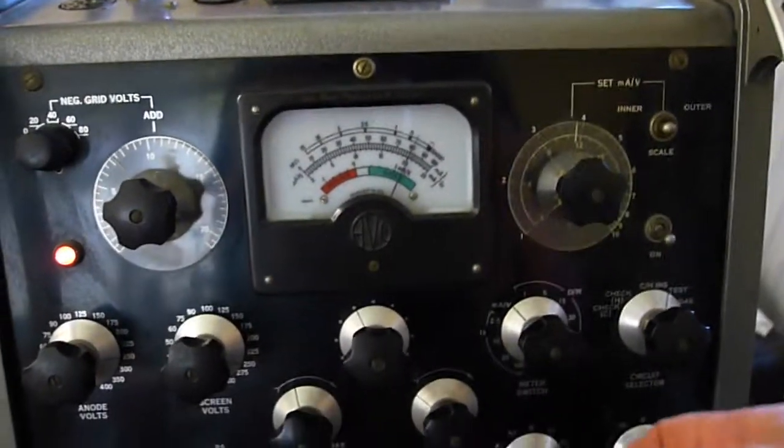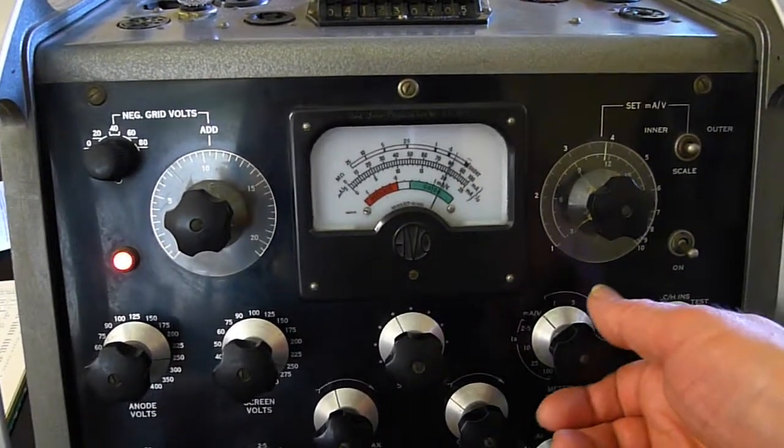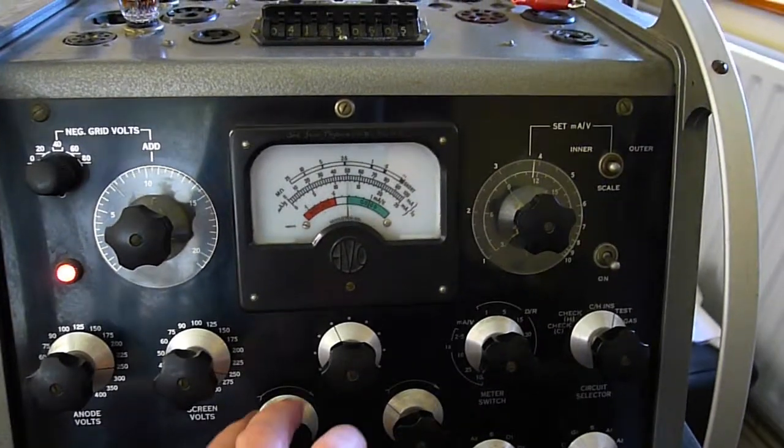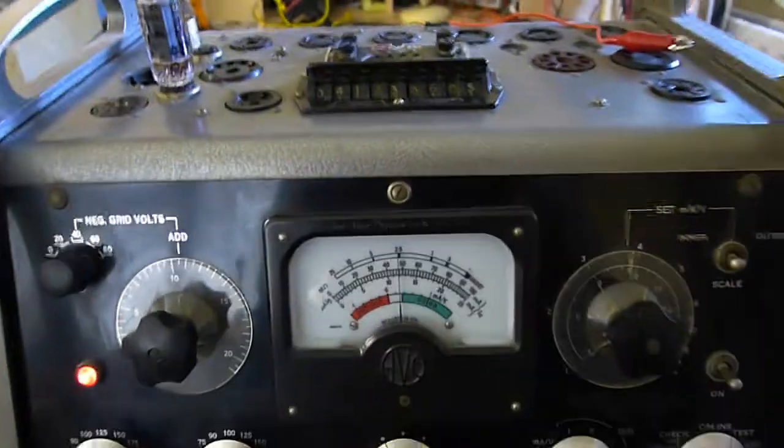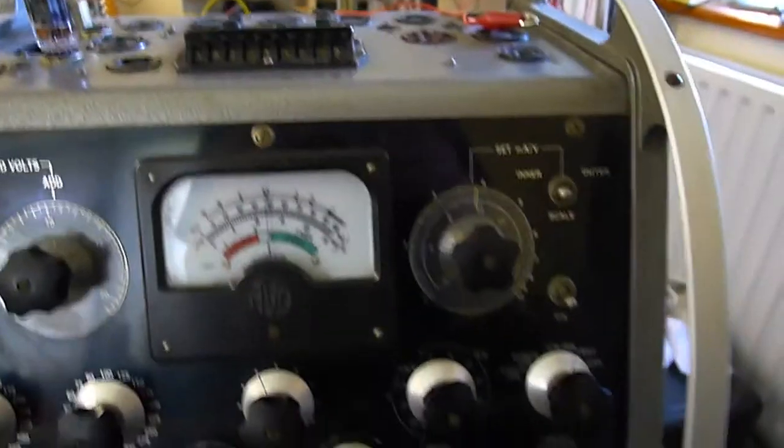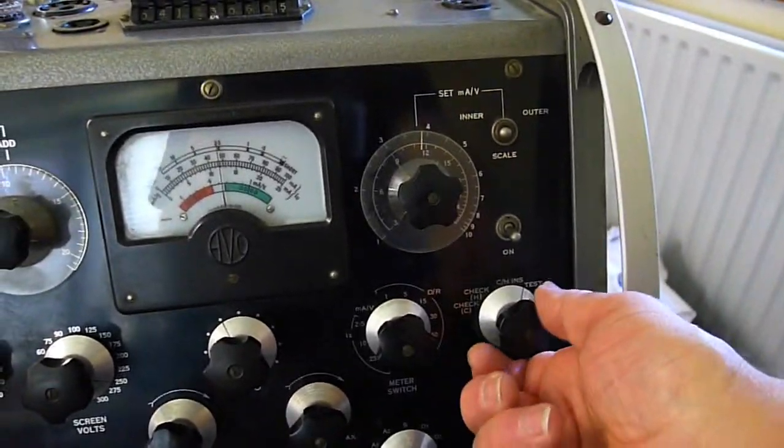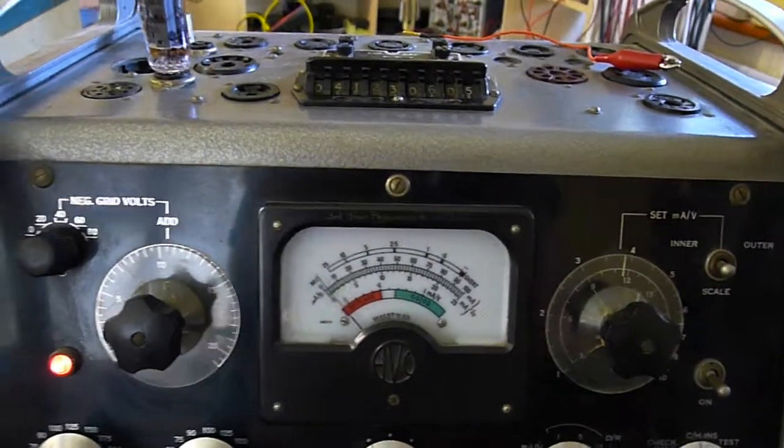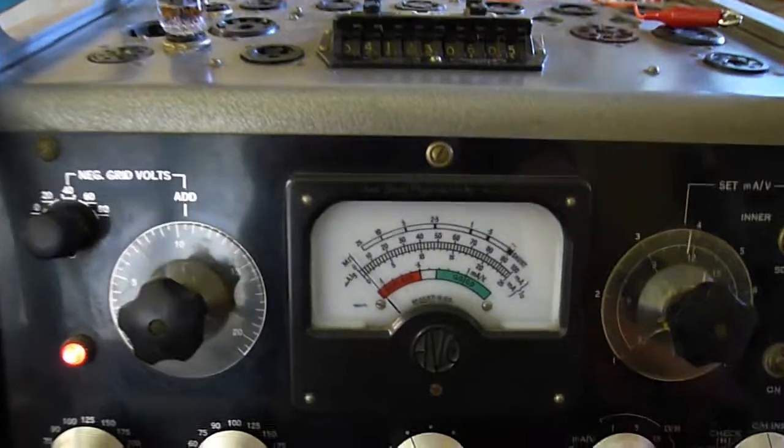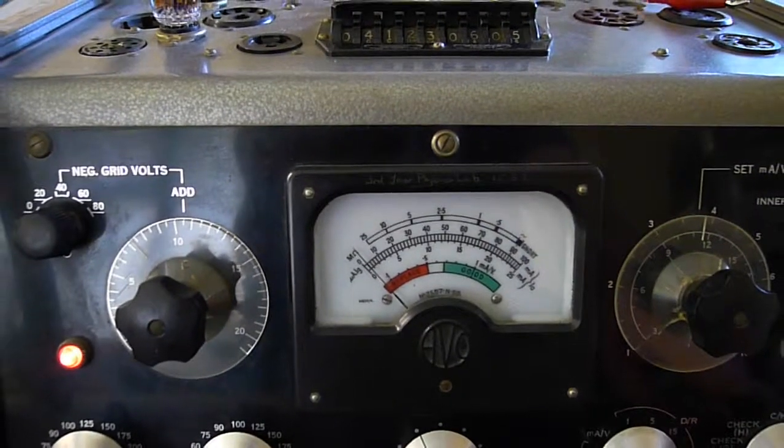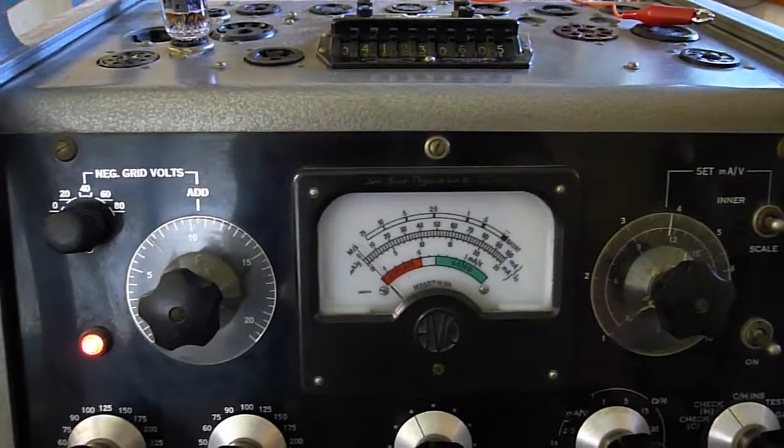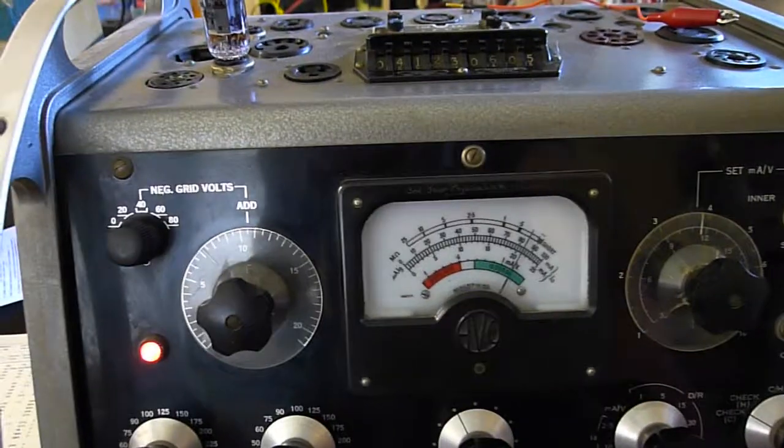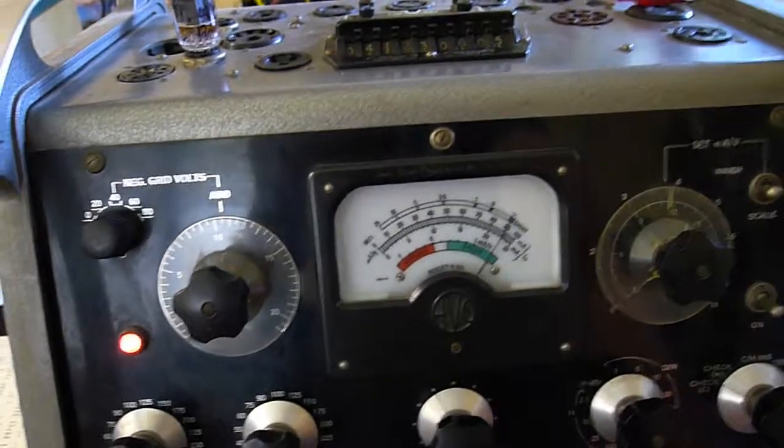So we turn the sensitivity back down, so we don't damage the meter. Turn these controls back to the zero position. 48 milliamps. Then we can take off the test. And sometimes the megohms, when these things are hot, is a little higher. But this one's really, really high insulation. Very, very high.